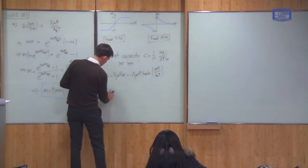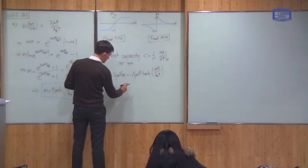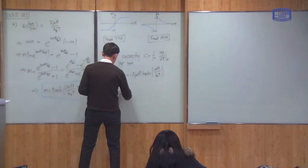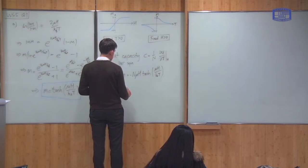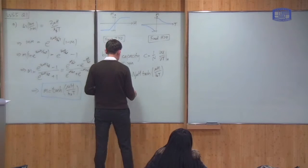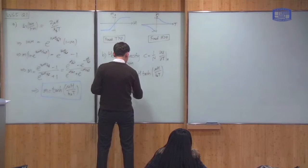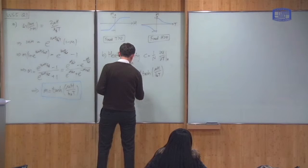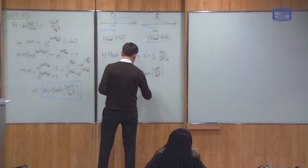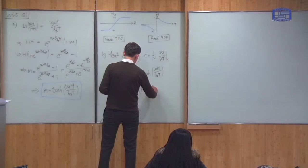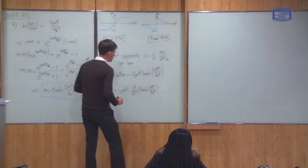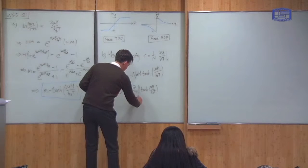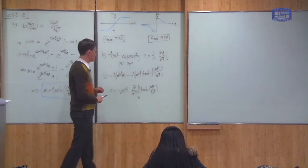We have that U = -N μH × M = -N μH × tanh(μH / kBT). This is an expression for the energy of the magnet. To get the heat capacity per spin, I differentiate this with respect to temperature at constant H, and divide by N — which cancels the N in front.